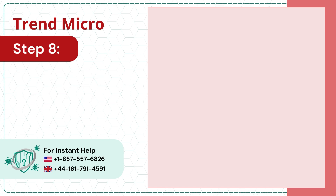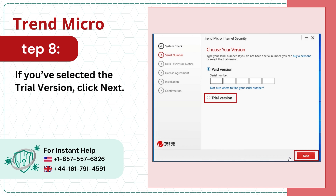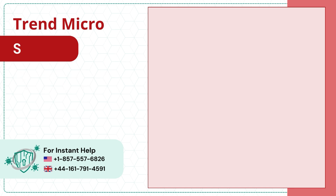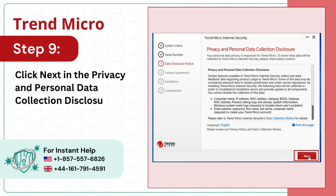Step 8: If you've selected the trial version, click Next. Step 9: Click Next in the Privacy and Personal Data Collection Disclosure screen.